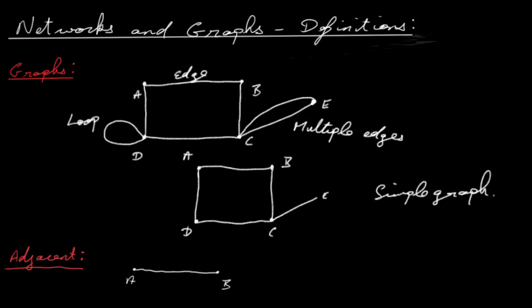The first definition we're going to look at is the word graph. A graph is a diagram consisting of points, which we're going to call vertices or nodes, joined together with lines called edges. Each edge joins exactly two nodes. So you can see we have nodes or vertices here at A, B, C, D and E, and we have edges connecting them.